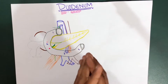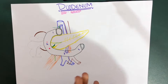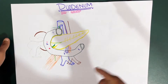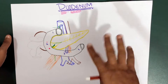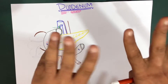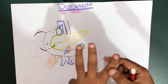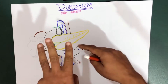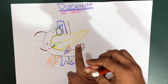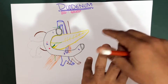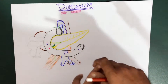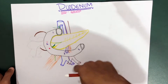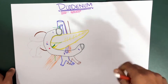We have divided the small intestine into three parts: the first part is the duodenum, the second part is the jejunum, and the third part is the ileum. In this section we're only going to talk about the duodenum.